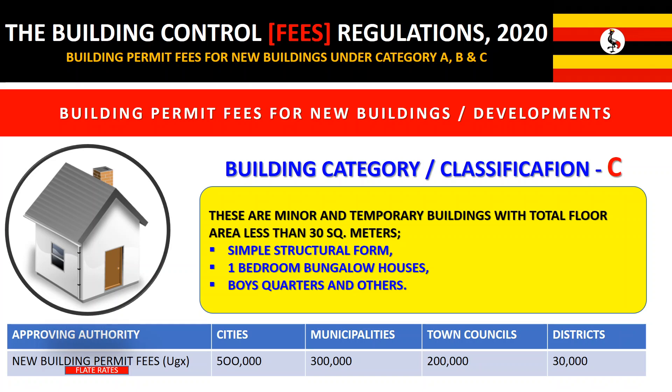Category C covers minor and temporary buildings with a floor area of less than 30 square meters, of simple structure form — usually one-bedroom units or boys' quarters. These are charged flat rates: 500,000 in cities, 300,000 in municipalities, 200,000 in town councils, and 30,000 in districts.